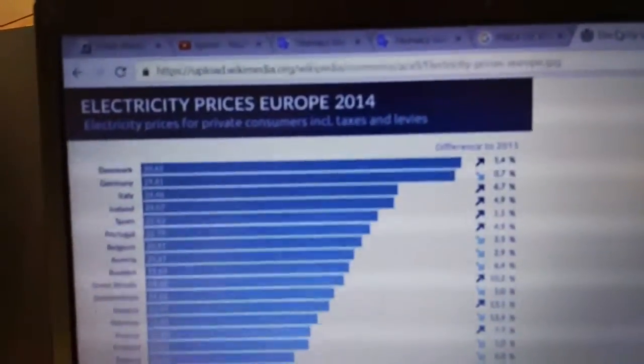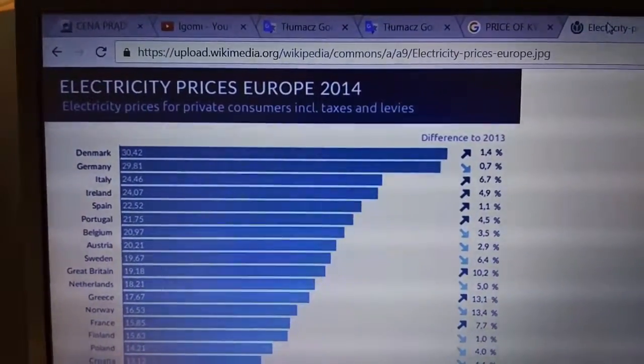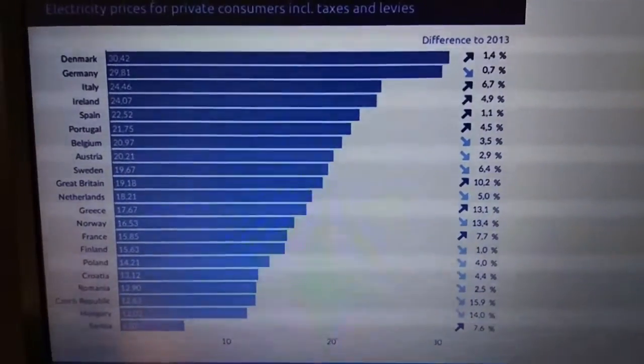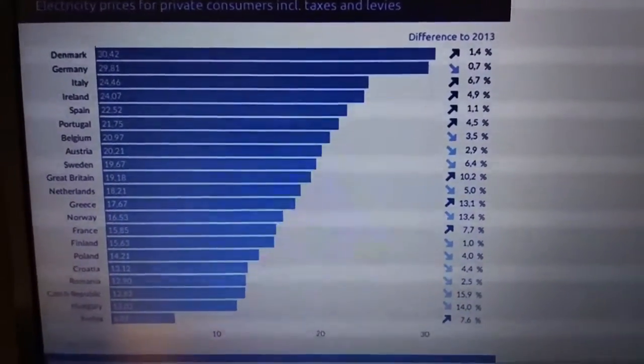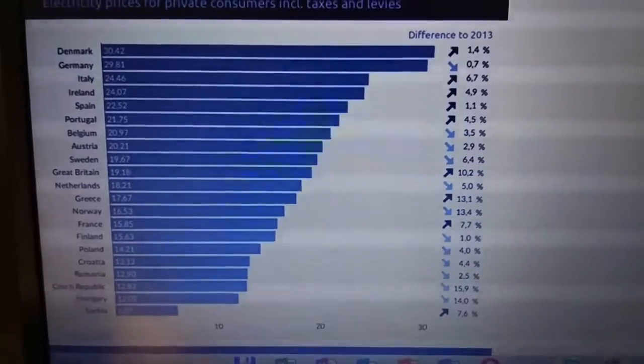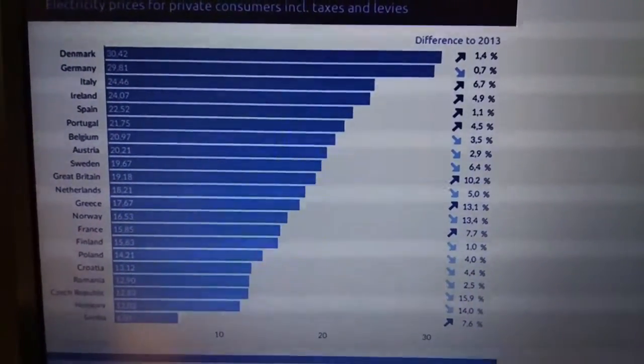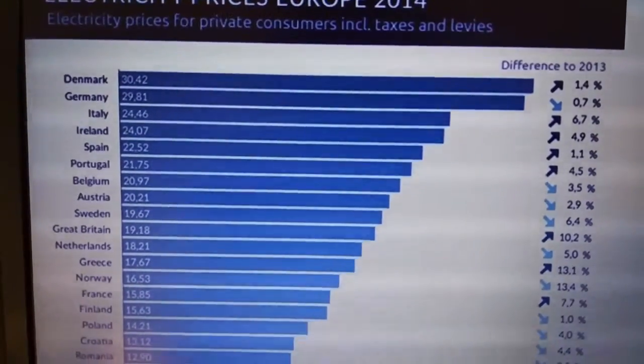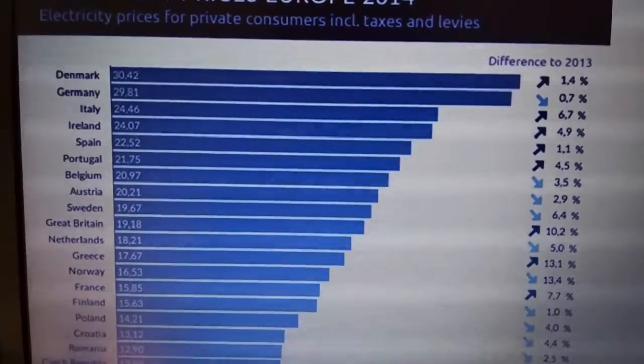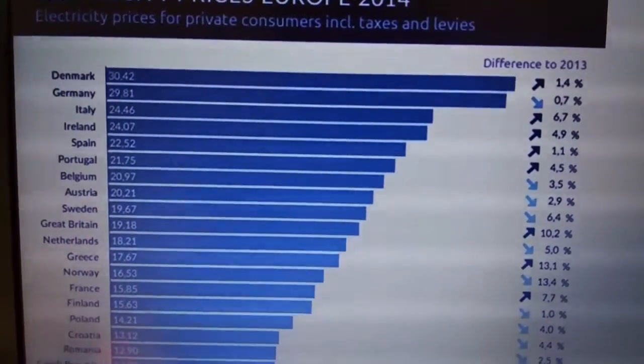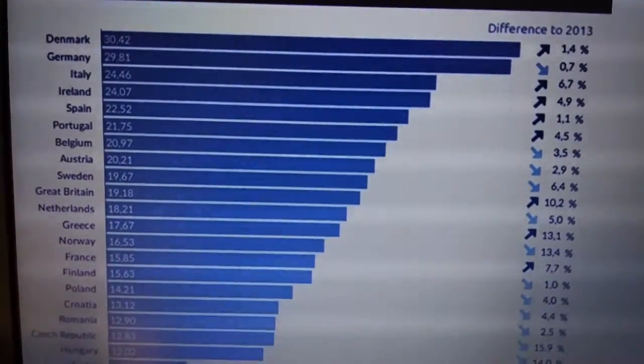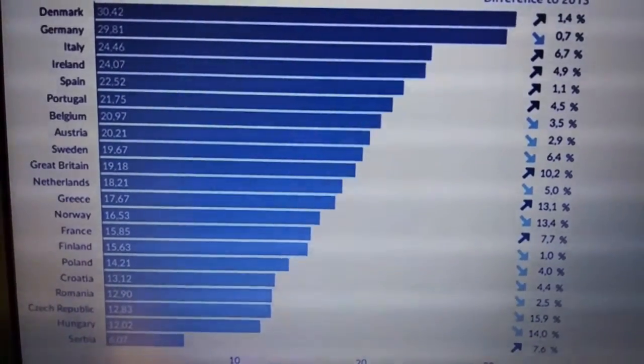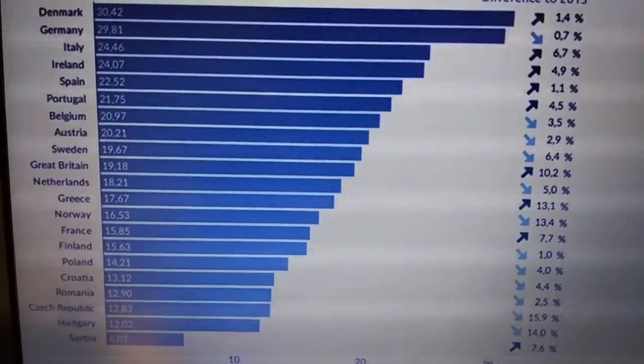It shows how much one kilowatt hour costs in each country. The prices are in American dollars—in this case, American cents. For example, in Germany it costs almost 30 cents per kilowatt hour. In Great Britain, energy is much cheaper and costs 19.18 cents per kilowatt hour.